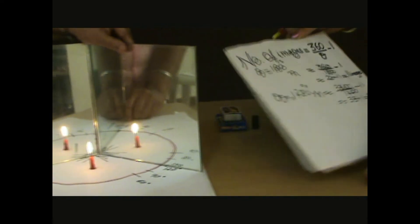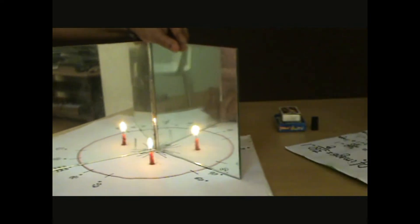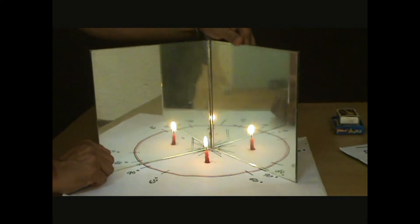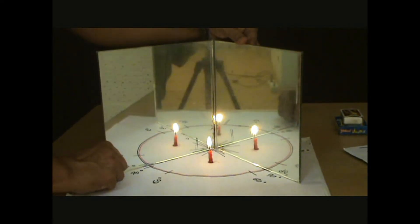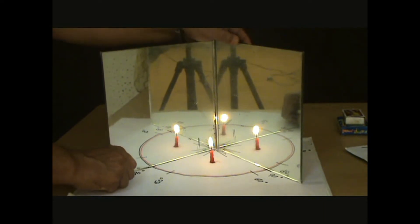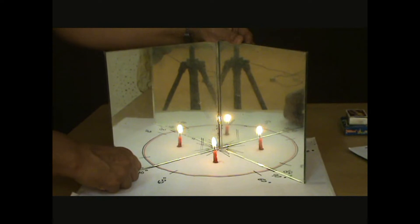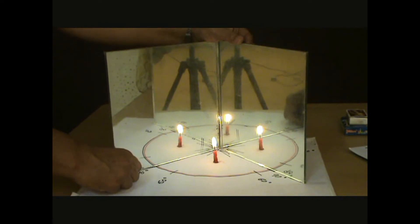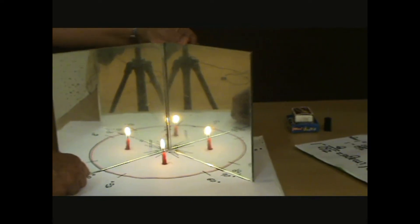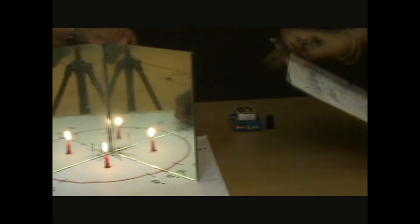Now I will change the angle to 90 degrees. And the number of images formed is 3. With the formula also, it is 3.